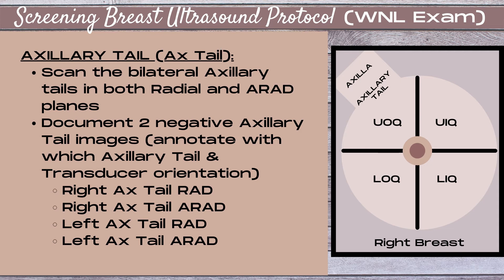It's really crucial when doing a breast ultrasound that you scan in radial and antiradial planes, as this demonstrates breast pathology in the most accurate shape. Using sagittal and transverse planes can underestimate the size of a mass, since most masses are ductal in origin and ducts follow a radial course in the breast. For your axillary tail, document two negative axillary tail images, annotated with which side and your transducer orientation — for example, right axillary tail radial, then right axillary tail antiradial — and then do the same for the left side.